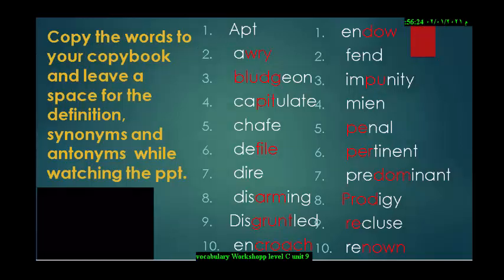Word number one is apt. Word number two is awry. Awry is two syllables. You start weak and then you go up. These three letters I made them in red because you stress on them. So you say it like awry.